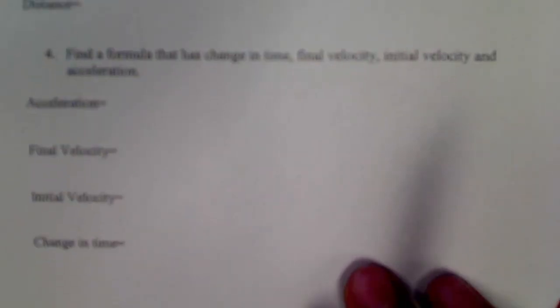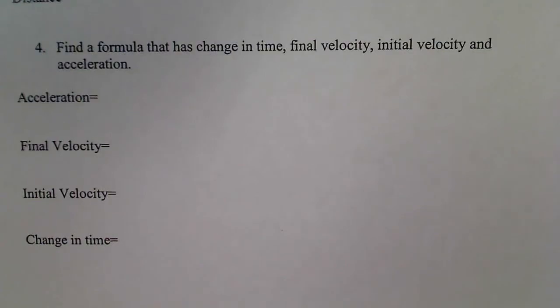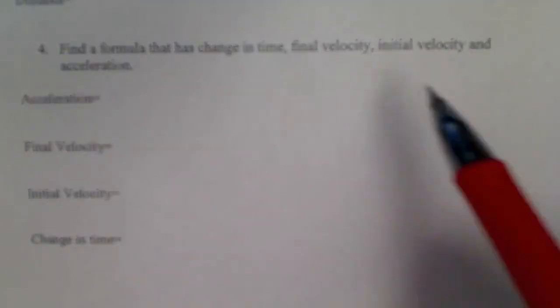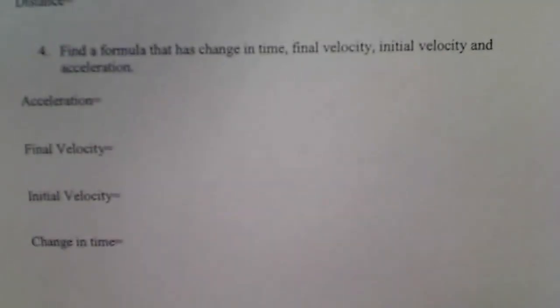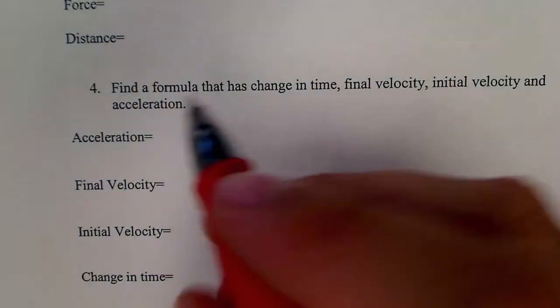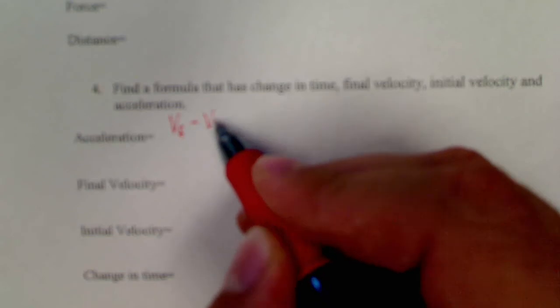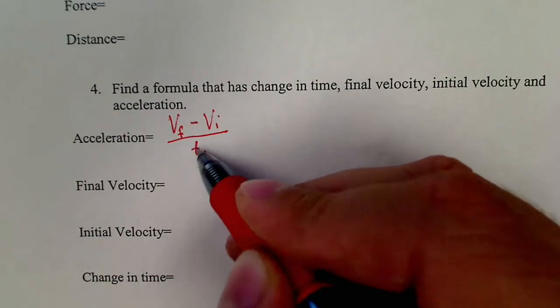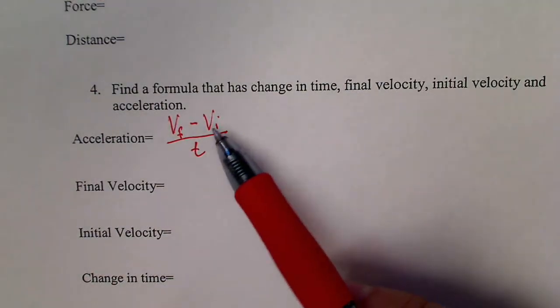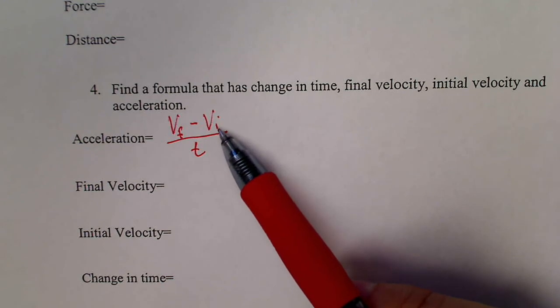I'm going to go down to the last one I've written here. Find a formula that has change in time, final velocity, initial velocity, and acceleration. If we look, there is a formula that says acceleration equals final velocity minus initial velocity over time. Now, these little f's and little i's, those are not variables. They're not part of math. We'll never add them or subtract them. We'll never put a number in for them.